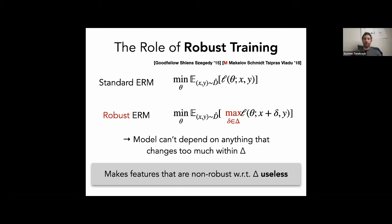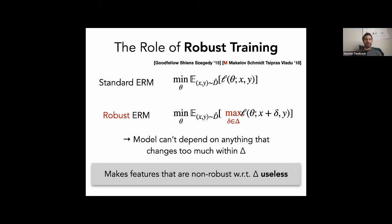A student asked: if you replace the max with an expectation, would that correspond to data augmentation? Yes — random perturbation from the set. But it does not work, because in high dimensions randomly sampling perturbation directions will never discover the specific non-robust features the model is sensitive to. You need the optimization process to drive you toward the right direction; finding it at random is essentially impossible.